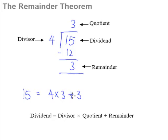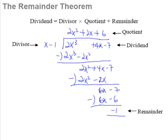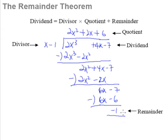Now, this works for numbers. But does this work also for polynomials? Yes. This is what's going on in the case of a long division for polynomials. Same thing. You should have learned how to do long division for polynomials by now. The items here remain the same. This thing here is called the dividend. This thing here is called the divisor. This thing here is called the quotient. And of course, this negative 1 here is the remainder.